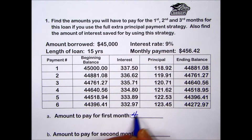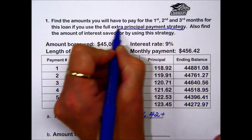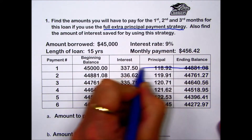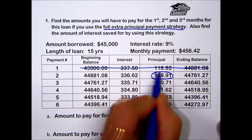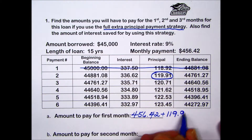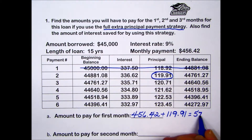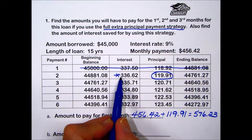The amount to pay for the first month always includes your monthly payment of $456.42. But we're going to use the full extra principal strategy to add an additional principal. Your first monthly payment takes care of the obligation of the first payment. The next full extra principal payment we're going to include with our first payment comes from line two — $119.91 — which adds up to a $576.23 payment.